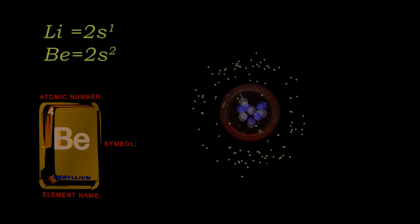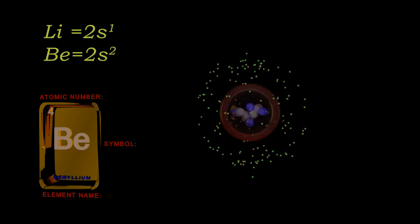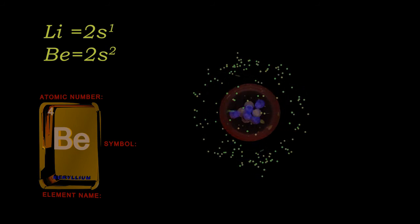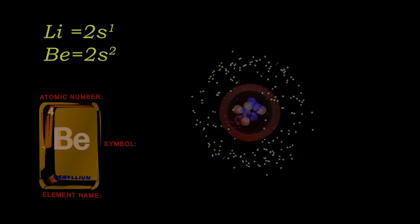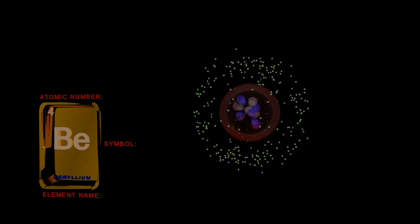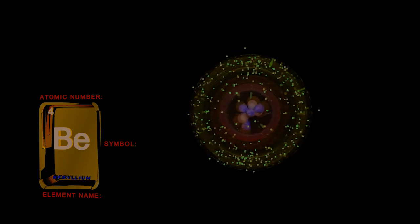Hopefully this video, you have seen that the second principal energy level n equals 2 accommodates the third and fourth electron in the atom as we build up energy levels, the Aufbau principle. These two electrons with opposite spins fill just a little bit larger, but still spherical, 2s subshell.